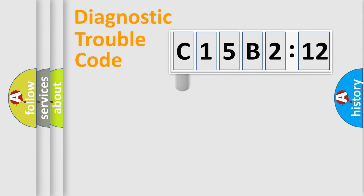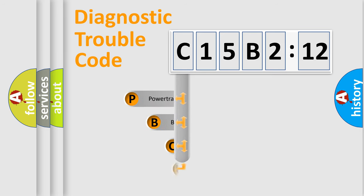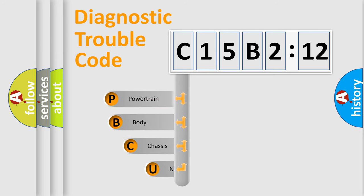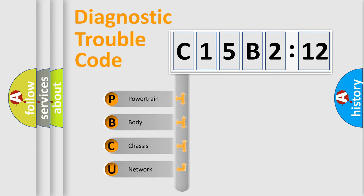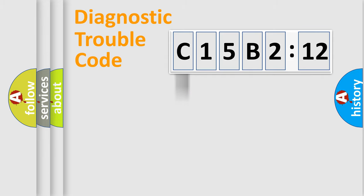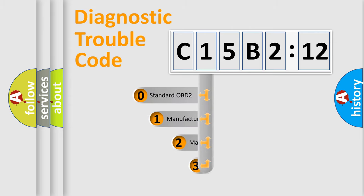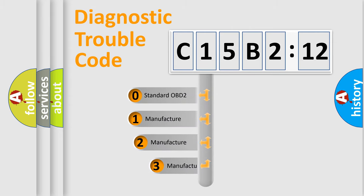First, let's look at the history of diagnostic fault code composition according to the OBD2 protocol, which is unified for all automakers since 2000. We divide the electric system of an automobile into four basic units: Powertrain, Body, Chassis, and Network. This distribution is defined in the first character of the code.